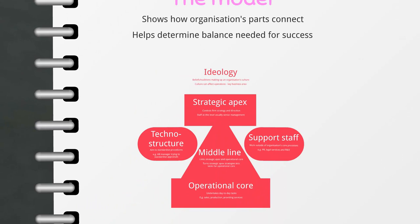So we can see the model in full: the strategic apex at the top, the operational core at the bottom — which makes visual sense, as orders go down and are turned into tasks by the middle line management. The technostructure is to the left-hand side and the support staff to the right-hand side, both maintaining balance to the core operations. Now let's give you an example using a professional cricket club.